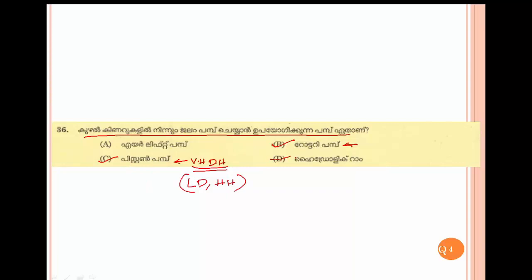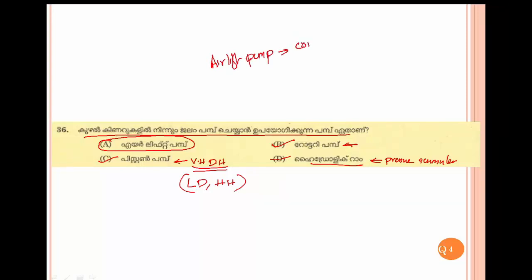The hydraulic ram actually accumulates pressure — it is a pressure accumulator. The air lift pump uses compressed air. The air lift pump operates at around 150 meters depth.